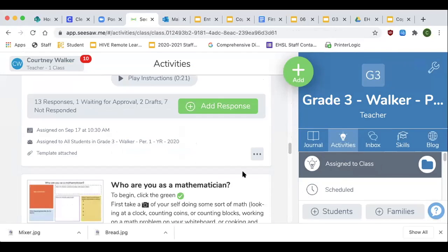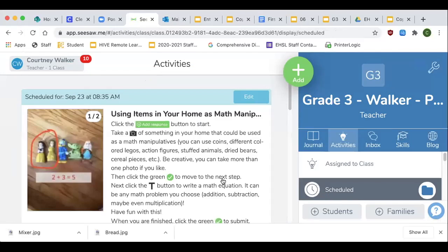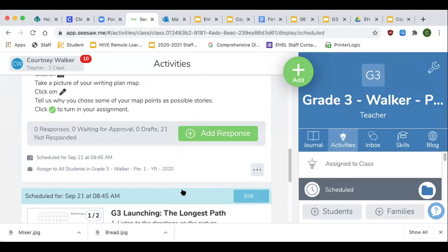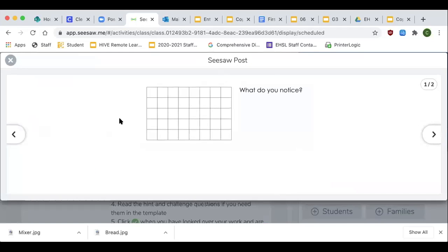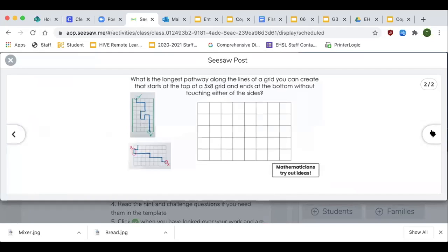We already did that one. Where is it? Here it is. So you have a couple of screens. What do you notice? And then it's saying, what is the longest pathway along these lines of the grid that you can create? But it needs to start at the top of the grid and it needs to end at the bottom of the grid, but it cannot touch the sides of the grid.